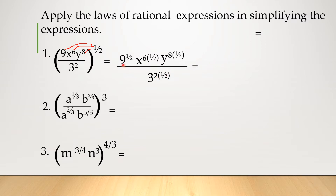Now, 9 raised to 1 half is simply in radical form — you can change this to radical form. This is the index of the radical form, which means this is square root. So 9 raised to 1 half is the square root of 9. For x, 6 times 1 is 6, divided by 2, that is 3.